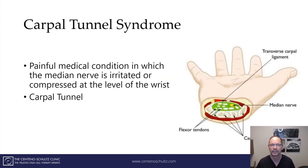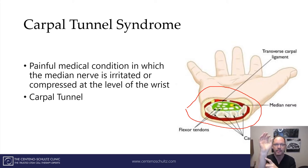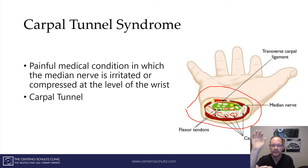Let's move on to carpal tunnel syndrome. This is a painful condition resulting from compression of the median nerve in the wrist. As depicted here in this cross-section, the median nerve, as it descends from the arm into the hand, has to pass through a tight tunnel called the carpal tunnel. It's composed of the carpal bones, many tendons, and the transverse carpal ligament forming the roof. Sandwiched within all this is a small, delicate nerve traveling from the forearm into the hand, making it susceptible to injury.